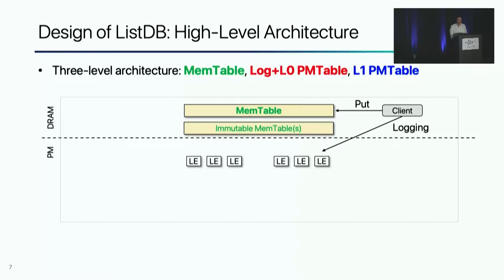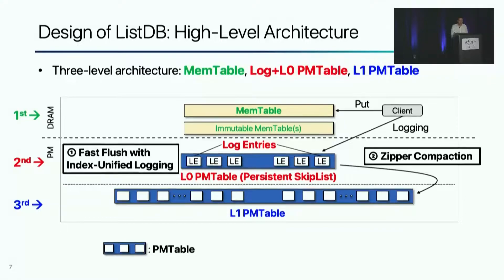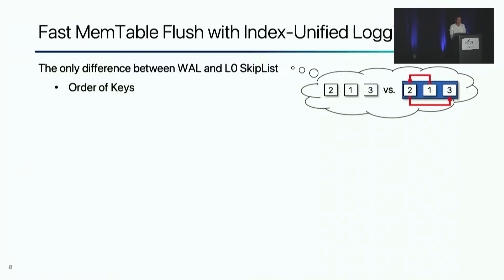Now let me present the high-level architecture of ListDB. When a client writes a key value, it appends a log entry and inserts the key value into a memtable. The second level is index unified logs. With index unified logging, background workers transform log entries into level 0 skiplist elements, which we call the level 0 PM table. Zipper compaction merge-sorts level 0 PM tables into the level 1 PM table in place. All PM tables use NUMA-aware braided skiplist. Converting a log entry into a skiplist element is straightforward because the only difference between a log entry and a skiplist element is the order of keys.